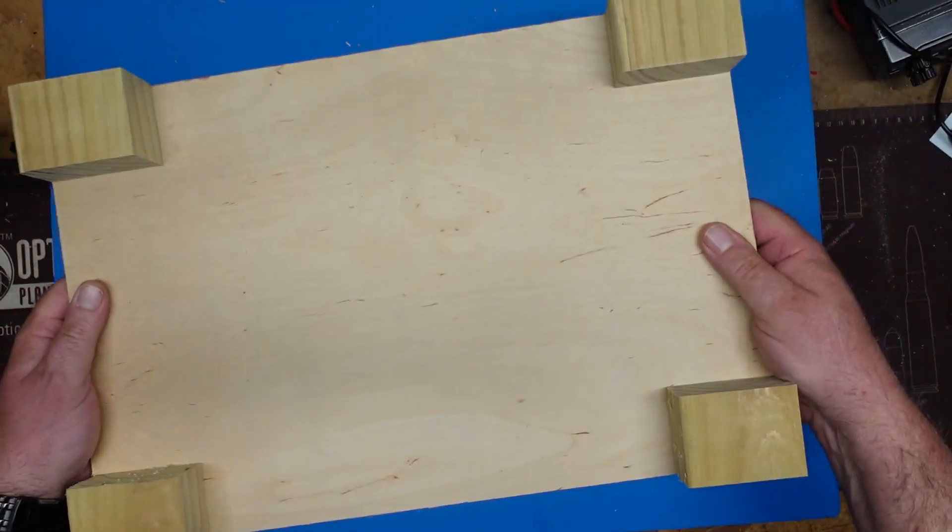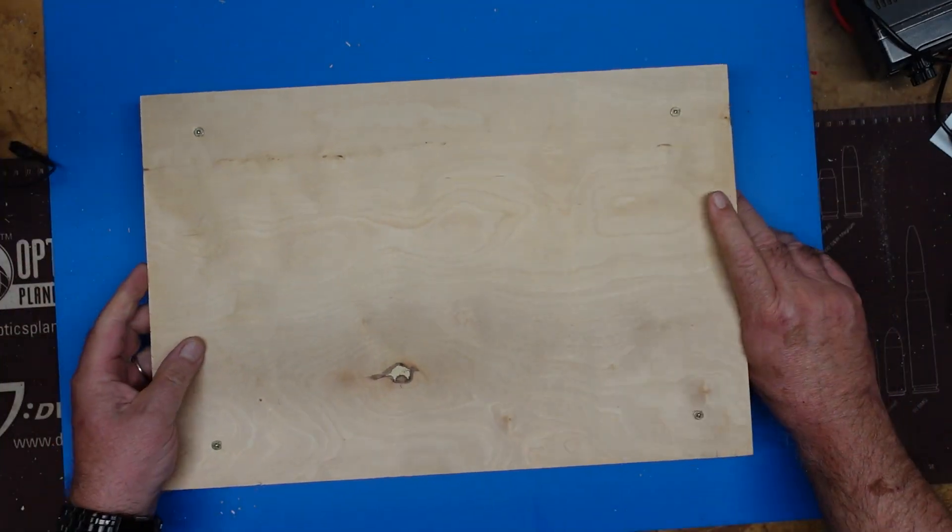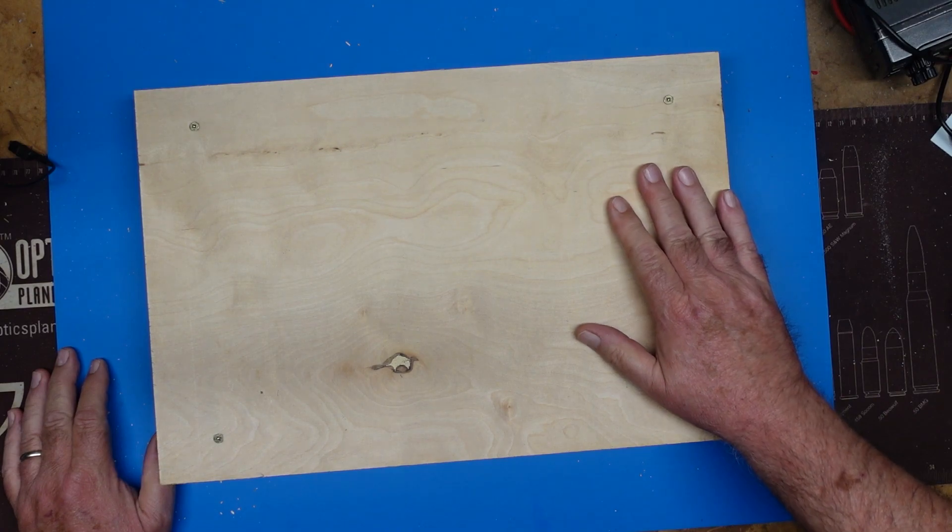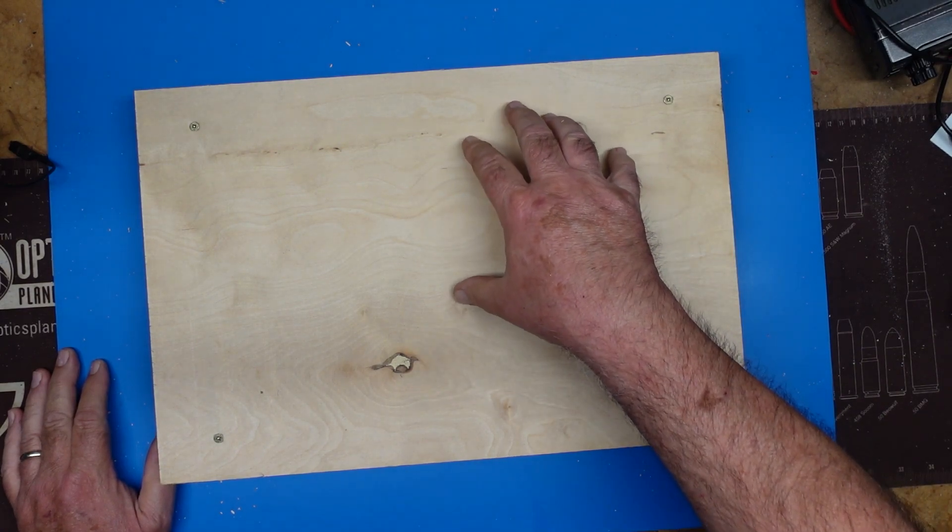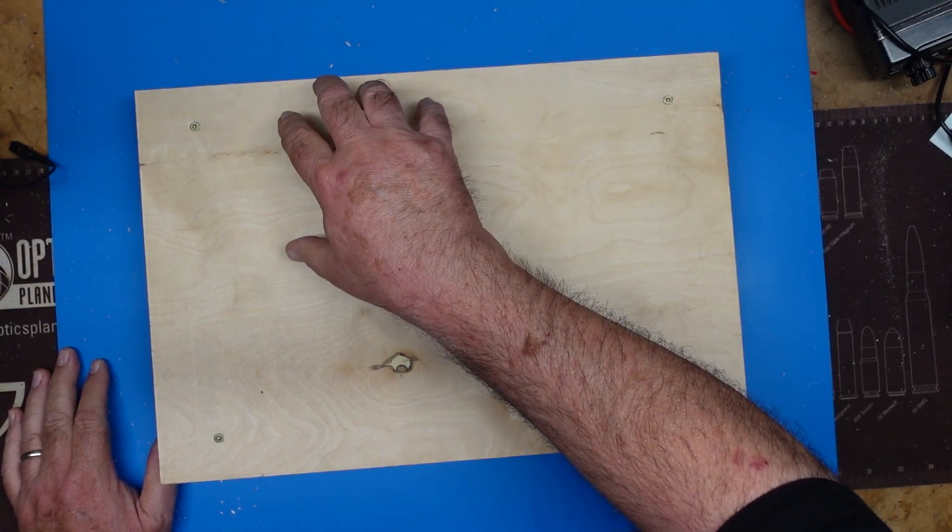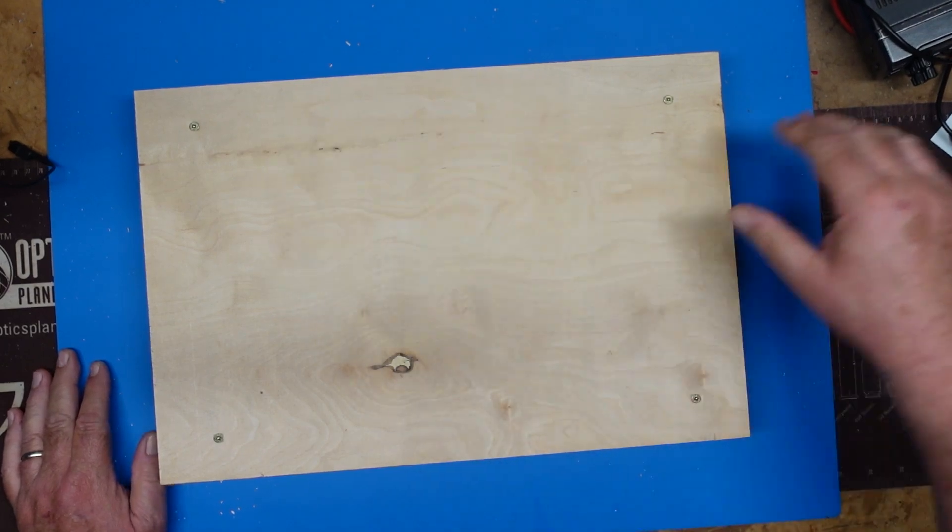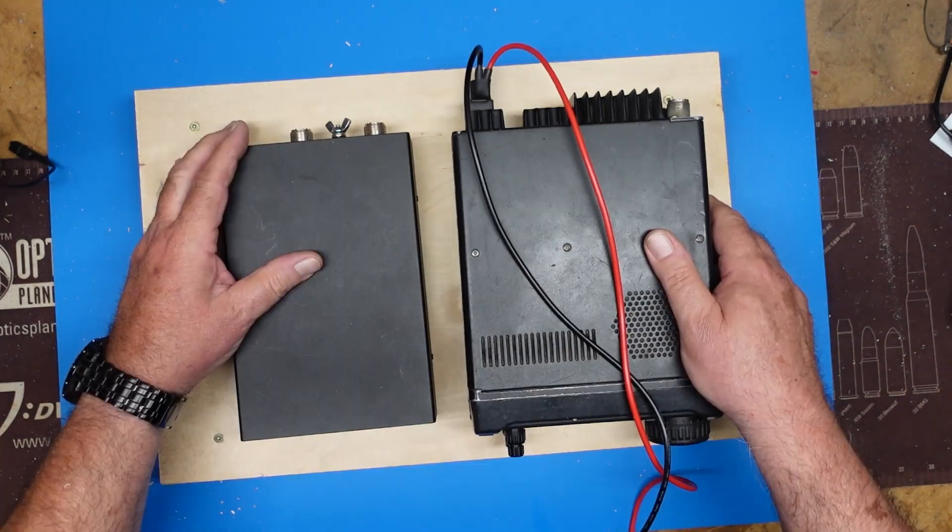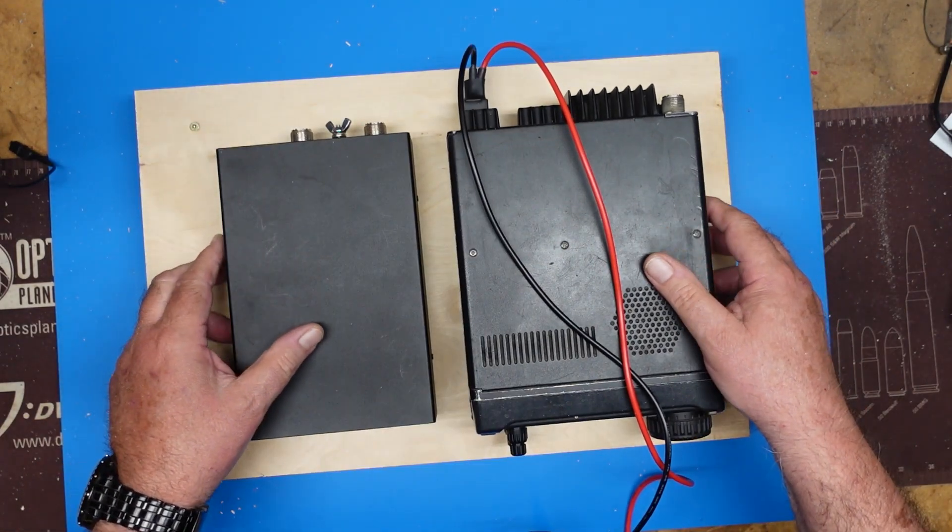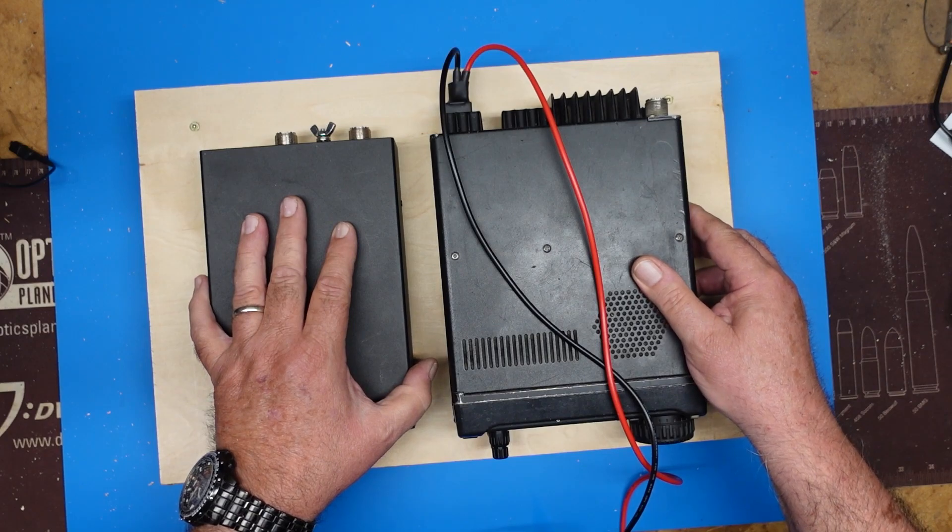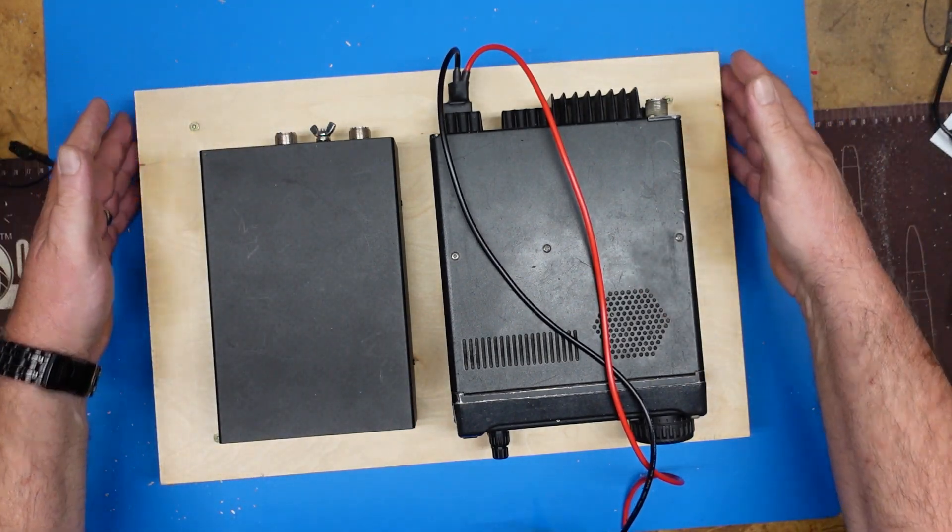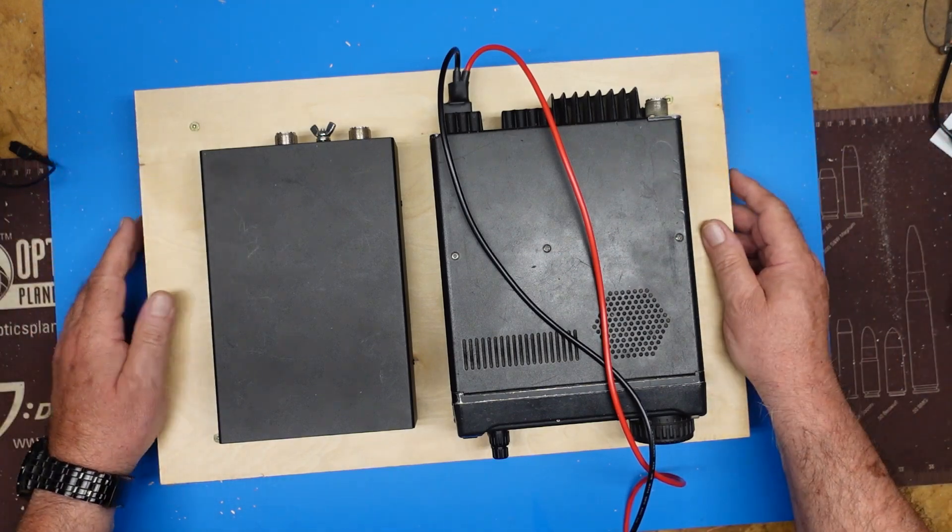I've got our screws in. Our little platform is built. So the next thing I'm going to do is set our radio on here and the tuner, and I'm going to mark where I want to put some holes for the wires to pass through. Maybe a little further over to center it up.